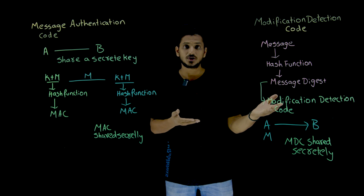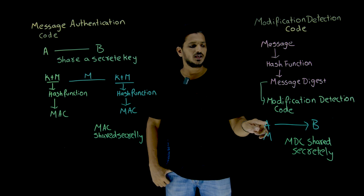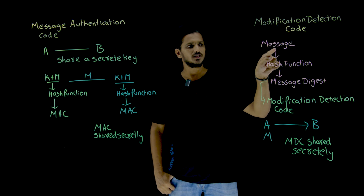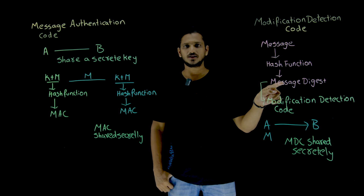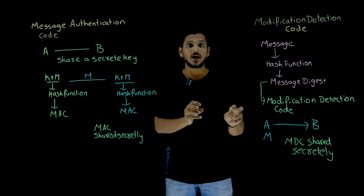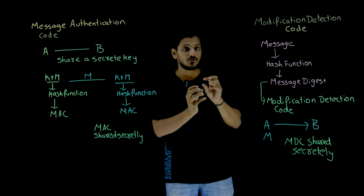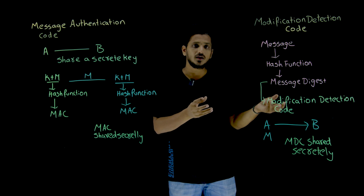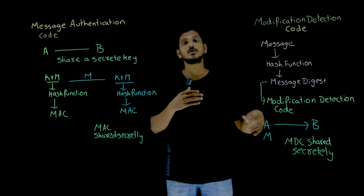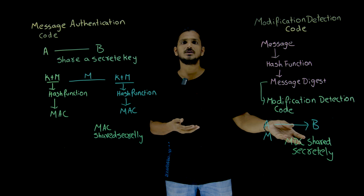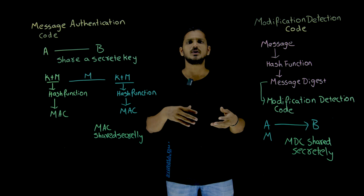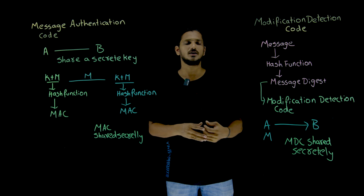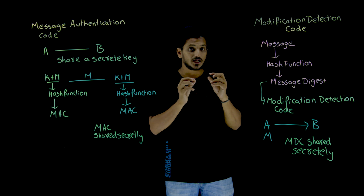Let's understand with an example how message digest is used as a Modification Detection Code. Suppose A wants to send a message to B. A takes the message, sends it to the hash function, and the hash function generates the message digest — the Modification Detection Code (MDC). Now A has to secretly share this MDC with B. They can use a secure channel, or they can encrypt the MDC using symmetric key or asymmetric key cryptography algorithms, and send it secretly to B.